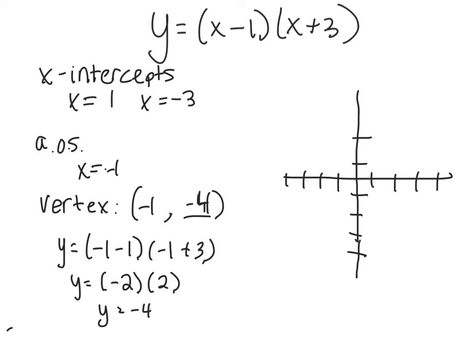X-intercepts at positive 1 and negative 3. We know we have an axis of symmetry at negative 1. And we have a vertex at negative 4. A little bit better. And then I'm going to try to draw a nice smooth curve. A little bit better.